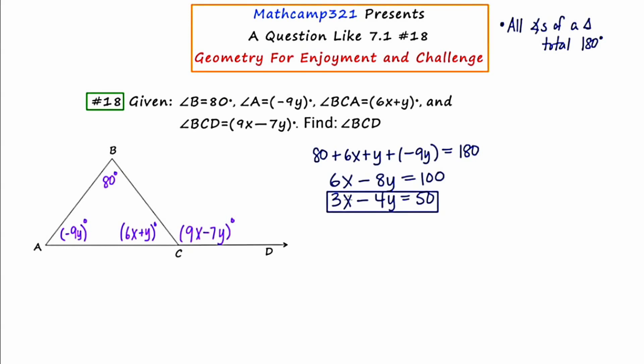Okay, a second theorem addressed in this chapter is the exterior angle theorem. And what this theorem tells us is that the measure of an exterior angle of a triangle is equal to the sum of the measures of the two remote interior angles.